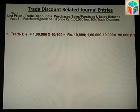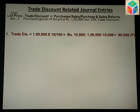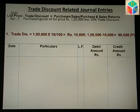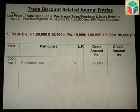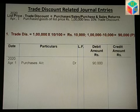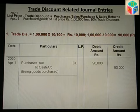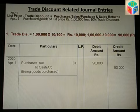List price is Rs 1,00,000, trade discount is Rs 10,000, so the net purchase amount is Rs 90,000. The journal entry will be for Rs 90,000. No trade discount account is opened. As shown in the working notes, the net bill amount is Rs 90,000, and the entry is passed for Rs 90,000 only. No entry is passed for trade discount separately.